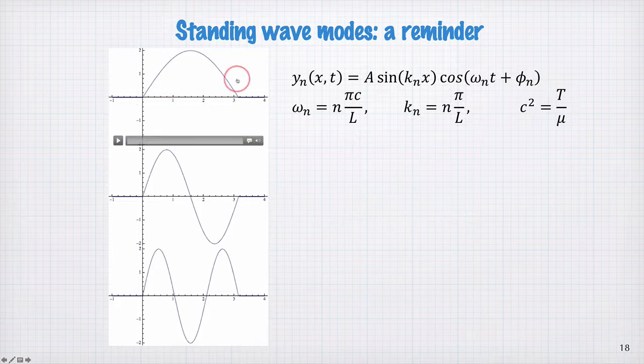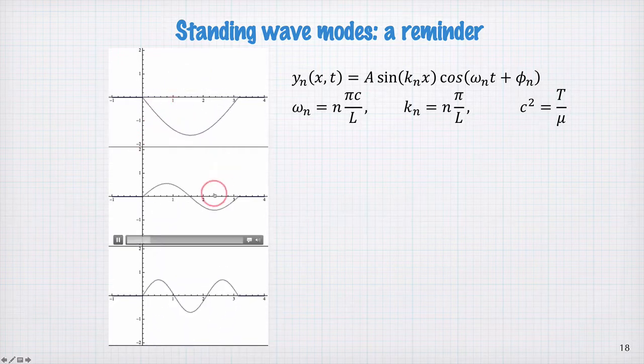In this example here, I've set L equal to π. If we look at the motion of the first three modes, so this is n equal to 1, 2, and 3, we see they have some pattern that looks like this.